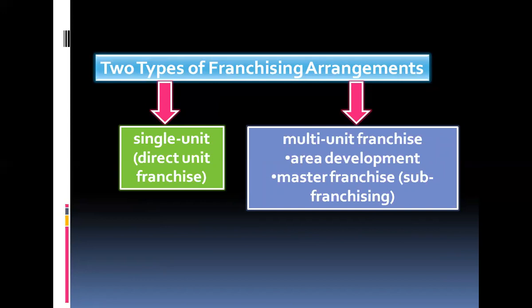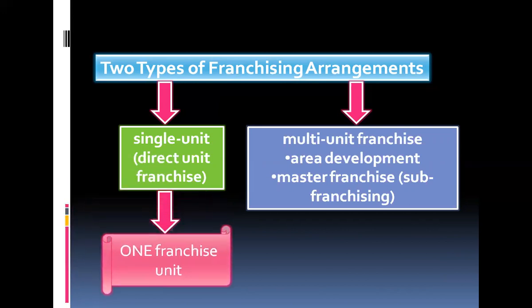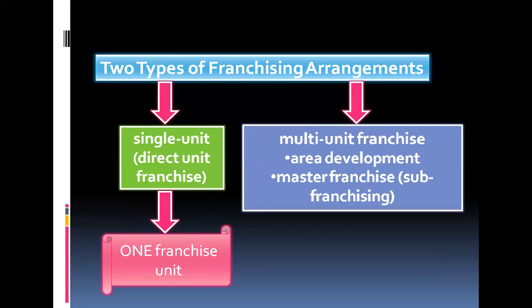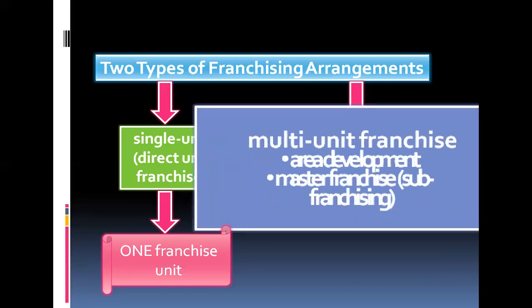A single unit or direct franchise is an agreement where the franchisor grants a franchisee the rights to open and operate one franchise unit. This is the simplest and most common type of franchise. It is possible, however, for a franchisee to purchase additional single unit franchises once the original franchise unit begins to prosper — this is then considered a multi-single unit relationship.